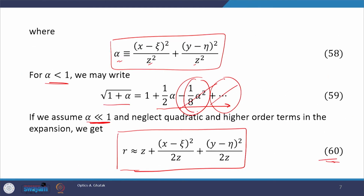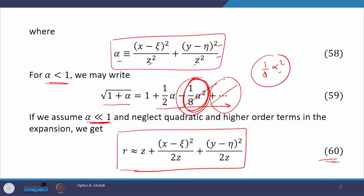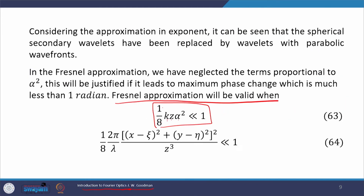The third term on the right-hand side of the expansion is (1/8)α². Alpha from equation 58 is a unitless term, and this term contributes a phase. From equation 57, z is a multiplicative factor, so the distance related to (1/8)α² is (1/8)α²·z, and the phase is (1/8)kzα². This phase must be much less than 1. Substituting the expression for α², we get a modified expression, and on further simplification the Fresnel approximation is valid when z is much larger than a certain quantity.